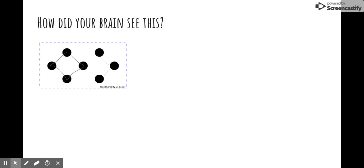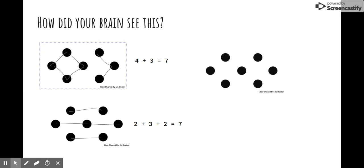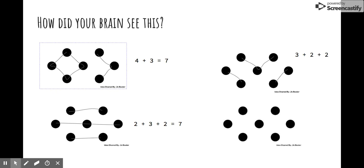Maybe you saw it like this, which if we were to do a number sentence would look like this. Maybe your brain saw it like this, maybe you saw it like this, or maybe you saw it like this. The possibilities are endless and there's no wrong strategy.